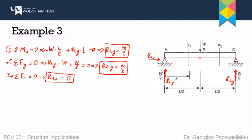Now that I have calculated the support reactions, all I need to do is perform sections near the points of interest. I need a section just to the right of A, just to the left of C, and also just to the left and just to the right of B, because there is a point load there. So I need to perform four sections.